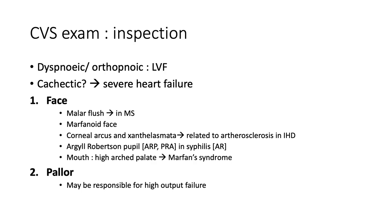Inspection of the cardiovascular system. Does the patient appear to be in obvious respiratory distress? Are they dyspneic or orthopneic, thinking about left ventricular failure? Does the patient look cachectic? With severe heart failure, there's congestion of bowel wall veins leading to poor nutrient absorption long-term, causing cardiac cachexia. In the face, does the patient have a malar flush, which speaks to mitral stenosis? A Marfanoid habitus: tall patient with greater arm span than body width, arachnodactyly, high arched palate, pectus excavatum, musculoskeletal signs, dislocation of the lens.